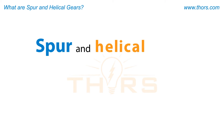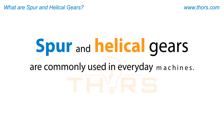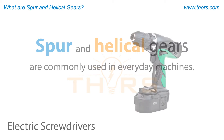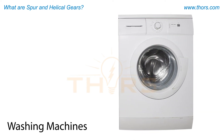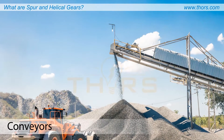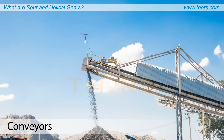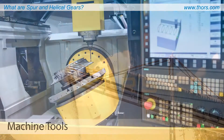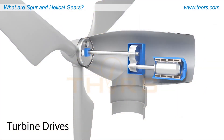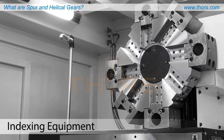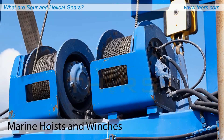Spur and helical gears are commonly used in everyday machines such as electric screwdrivers, washing machines, and conveyors. They are also used in complex equipment such as machine tools, turbine drives, indexing equipment, and marine hoists and winches.